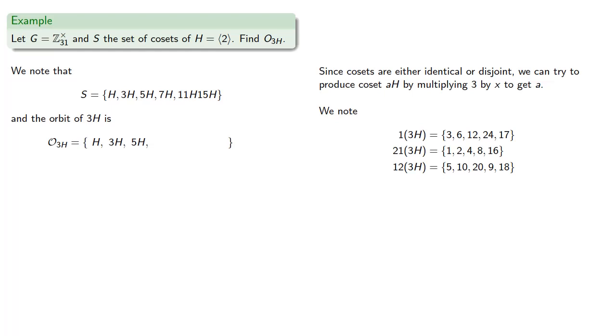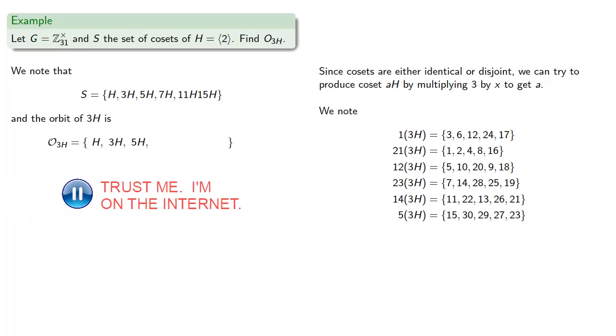And continuing in this fashion, we see that we can generate 7H, 11H, and 15H by an appropriate choice of multipliers of 3H. And so we see that the orbit of 3H is going to include all of our cosets. It's going to be our set S.